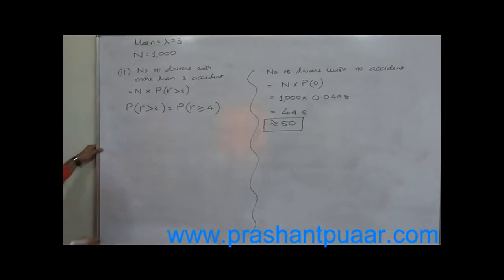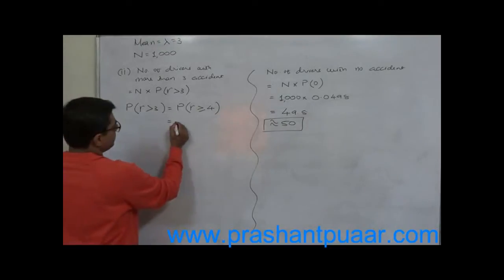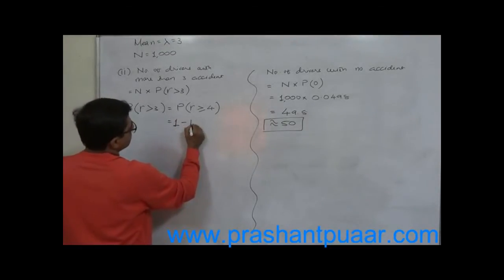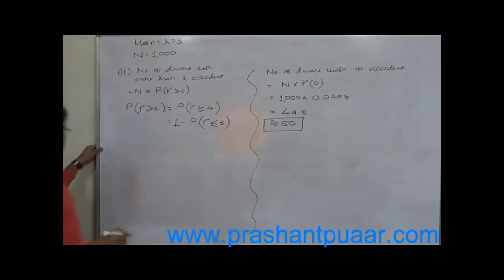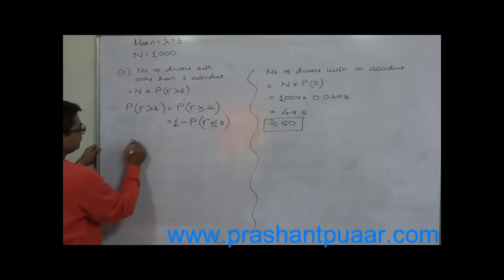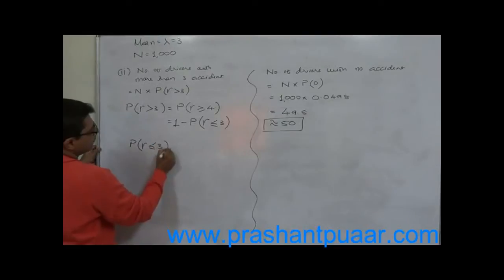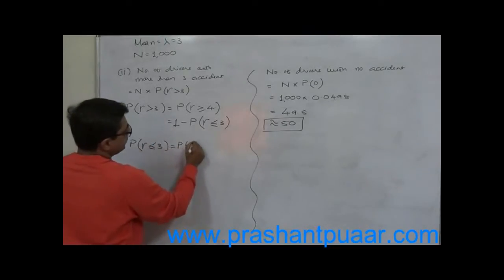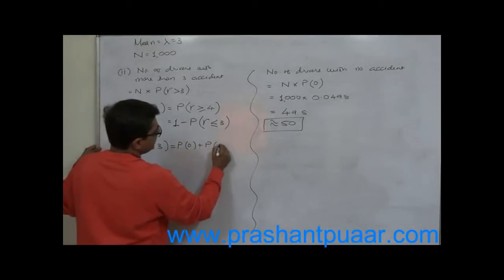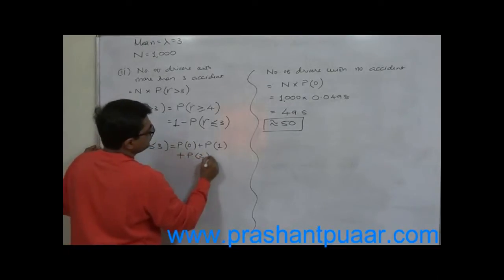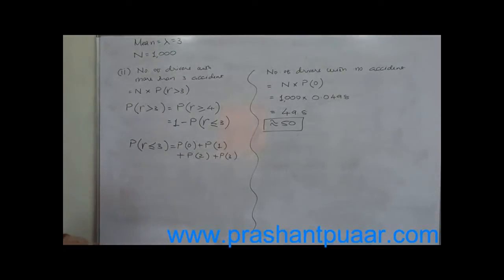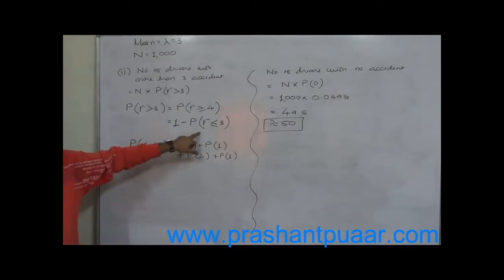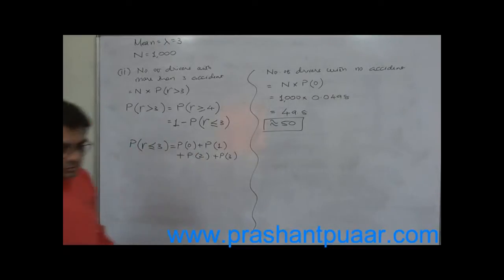How can we calculate this probability? For that purpose, we use 1 minus P(r less than or equal to 3). So first we have to find the probability of r less than or equal to 3, which means P(0) plus P(1) plus P(2) plus P(3). We have to find these four probabilities, and their summation will give the probability of r less than or equal to 3.